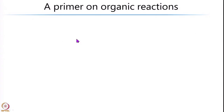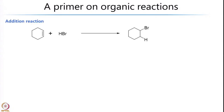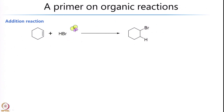Having said this, let us begin by looking at the basic kinds of organic reactions. There are mainly 3 classes of common organic reactions. The first one is called an addition reaction. Here we have a cyclohexene being reacted with a molecule of HBr, and both the hydrogen and the bromine in the HBr add across the double bond — that is the reason why one calls this an addition reaction. There are many such reactions in this particular class.